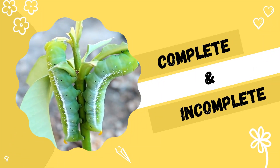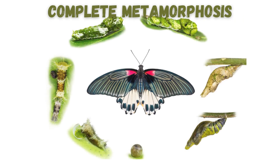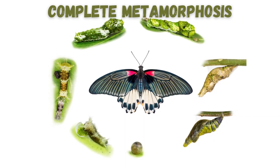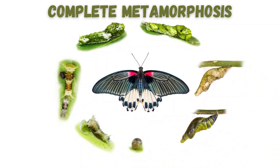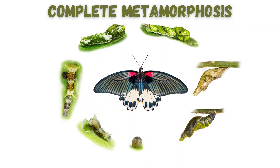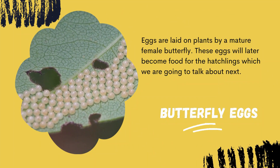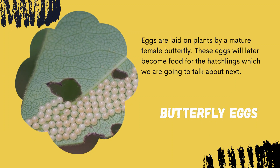Butterflies undergo a complete metamorphosis, meaning they go through four main stages, which are the egg, caterpillar or larva, pupa, and finally adult. This video will cover each stage in detail.